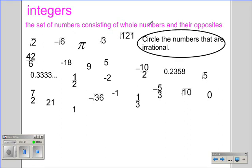Integers. The set of numbers consisting of whole numbers and their opposites. So let's circle those numbers that are the integers. Just that can be most closely defined as the integers. So I'm looking for integers. 42 over 6 becomes 7. That's an integer. 7 over 2, 3.5, not an integer. 21, integer. So I'm basically just looking for those counting numbers on my number line and their opposites. So both 18 and negative 18 would be considered integers.